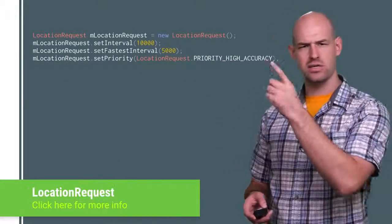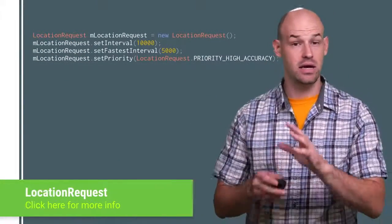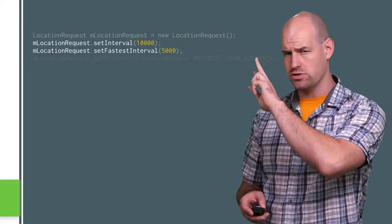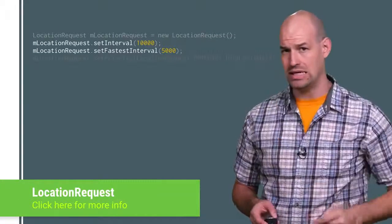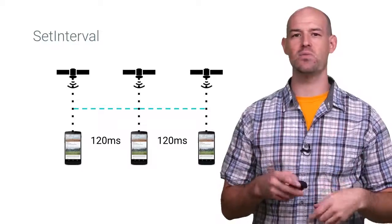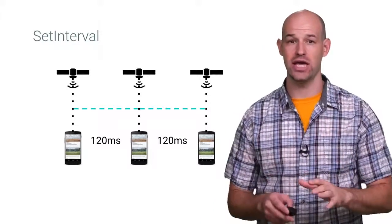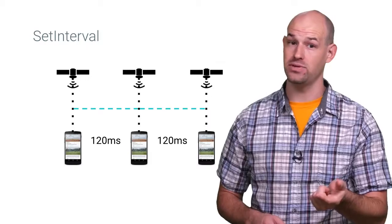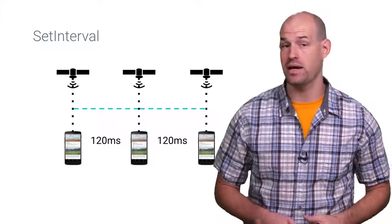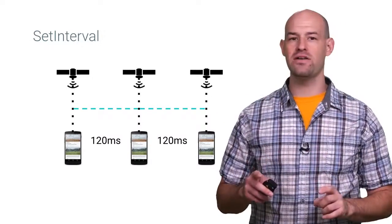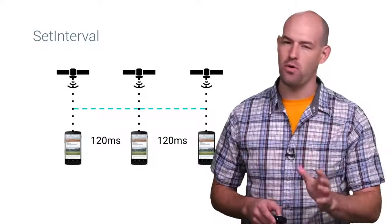A standard location request looks a little something like this. And in the name of performance, let's take a look at those first two values, namely the interval APIs. SetInterval sets the rate in milliseconds at which your app prefers to receive location updates. The lower the number, the more updates you get, and of course, the more battery you burn up as a result. Which means finding the right value to use for your interval is an important balance.